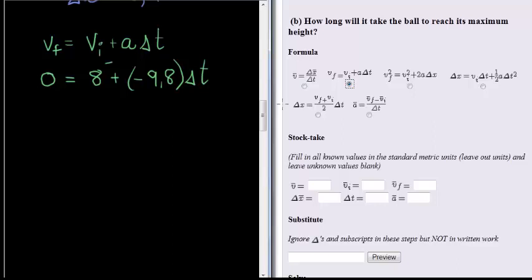Now from here on all we need to do is subtract eight on both sides. Okay, so subtracting eight on both sides gives me that negative eight is equal to negative 9.8 times delta t.